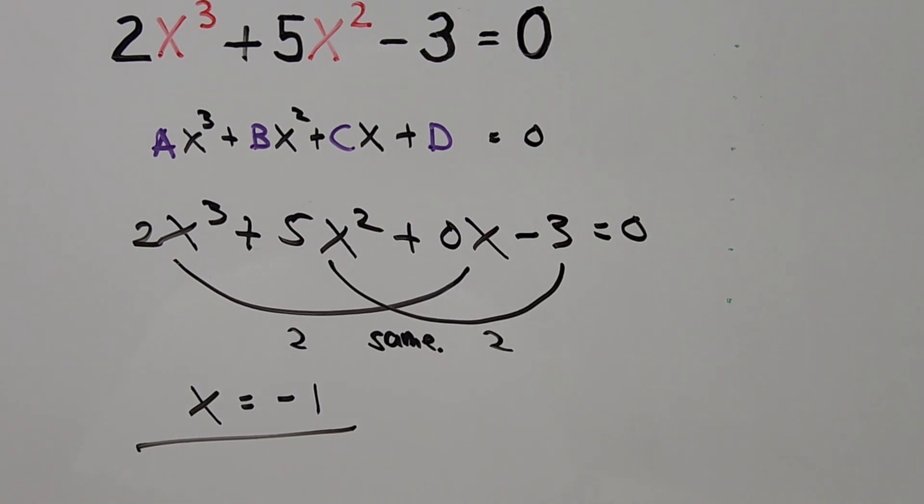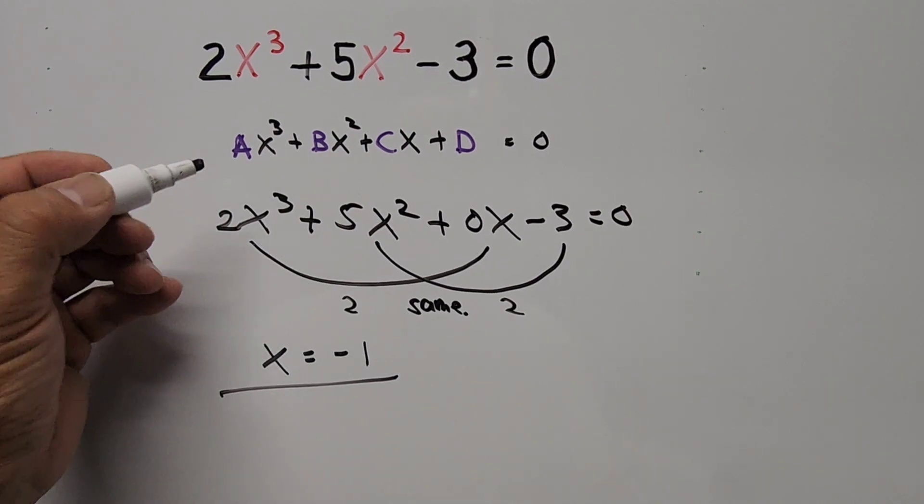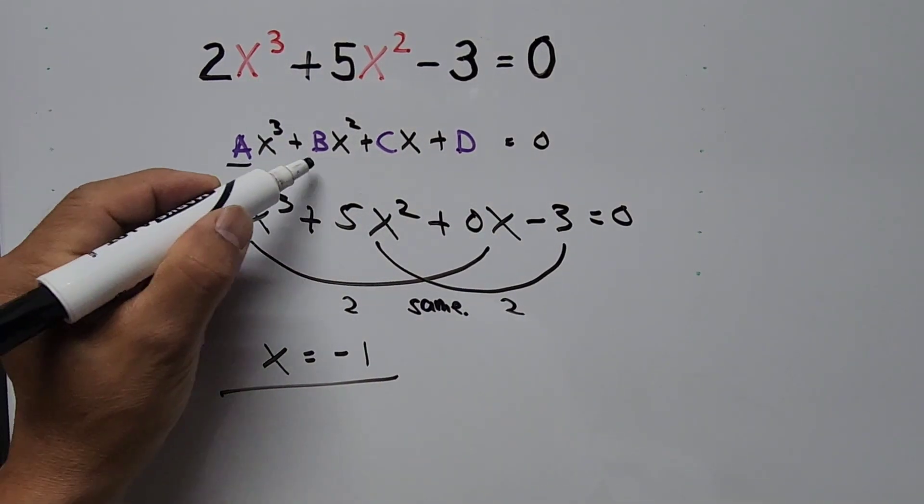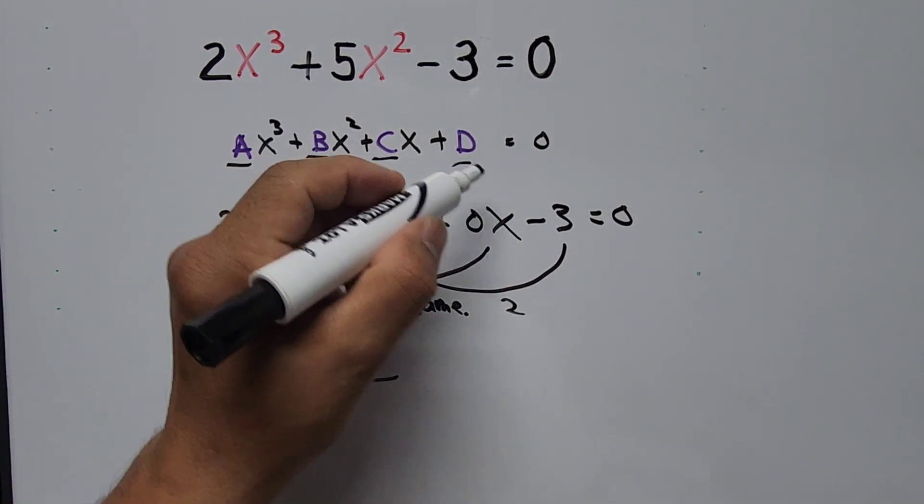And so next is we need to find the other possible solution for possible value of x aside from -1. If we add all the coefficients of each term, that should add up to 0. So let's do that. So in here we are adapting this format: A + B + C + D = 0.